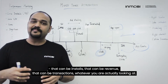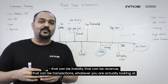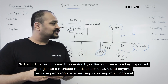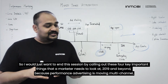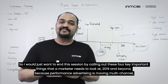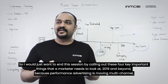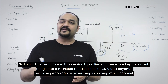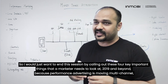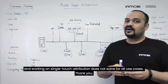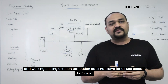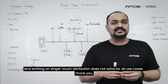That can be installs, that can be revenue, that can be transactions — whatever you are looking at. I want to end the session by calling out these four key things that a marketer needs to look at in 2019 and beyond, because performance advertising is moving multi-channel and working on single-touch attribution does not solve for all use cases. Thank you.